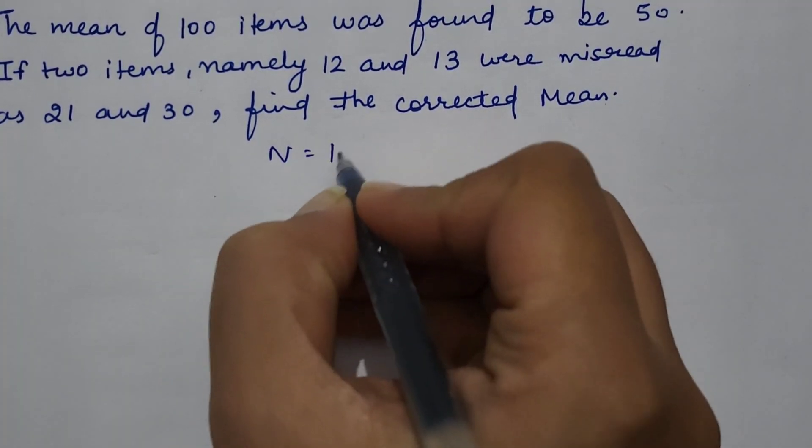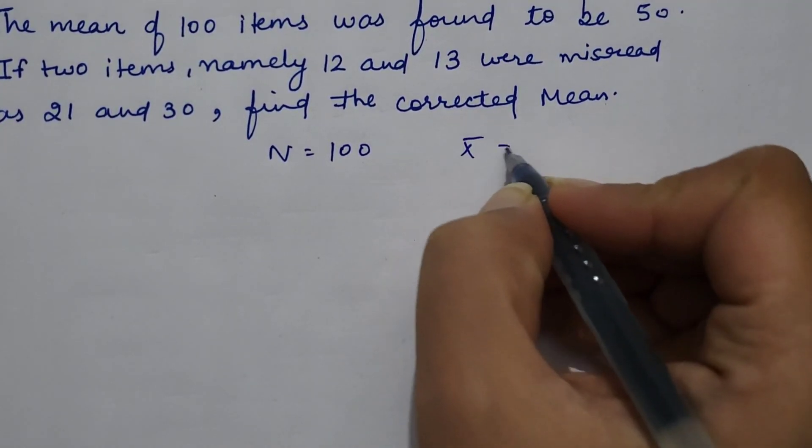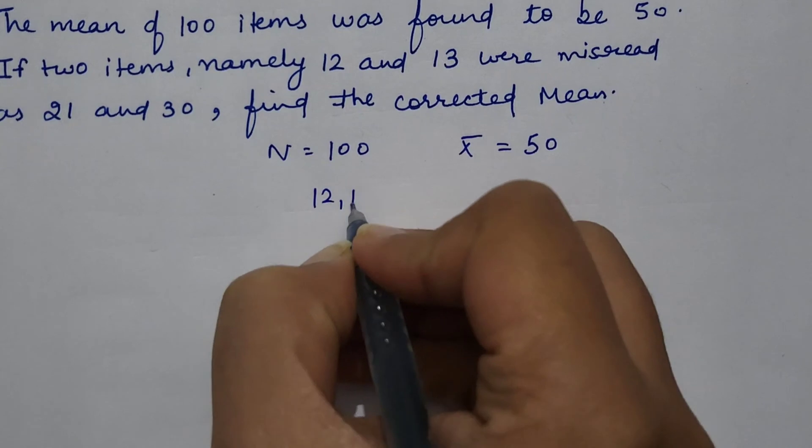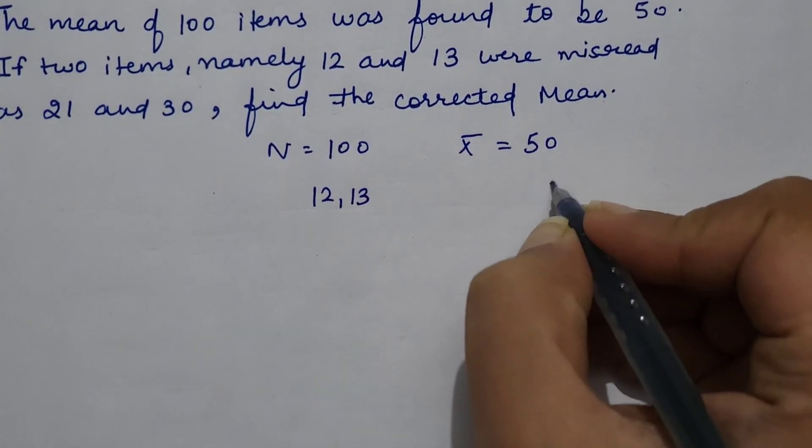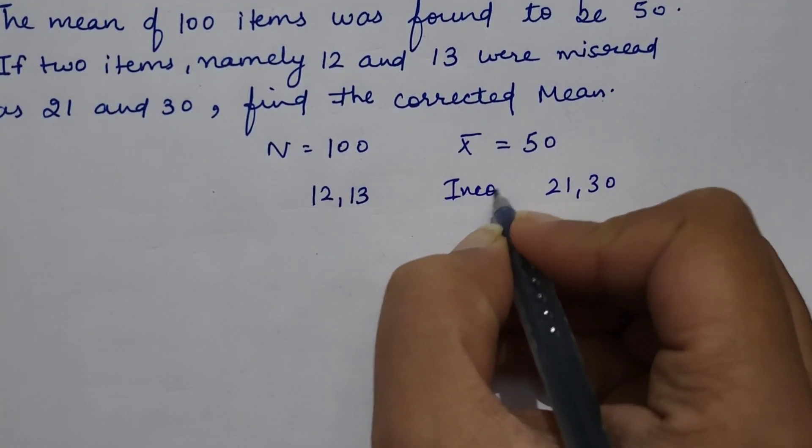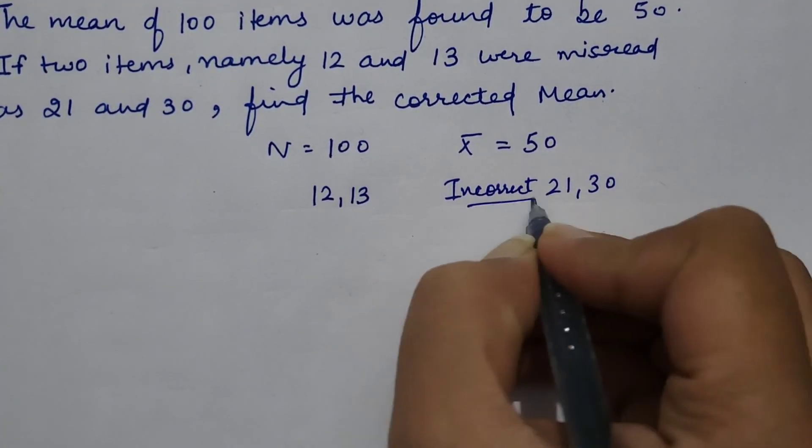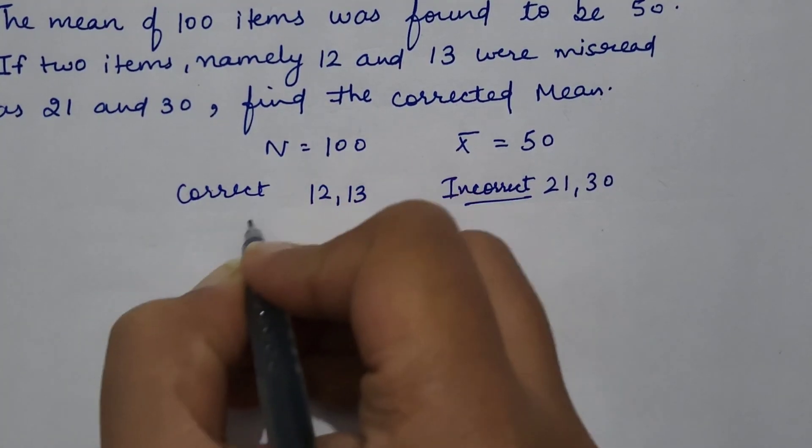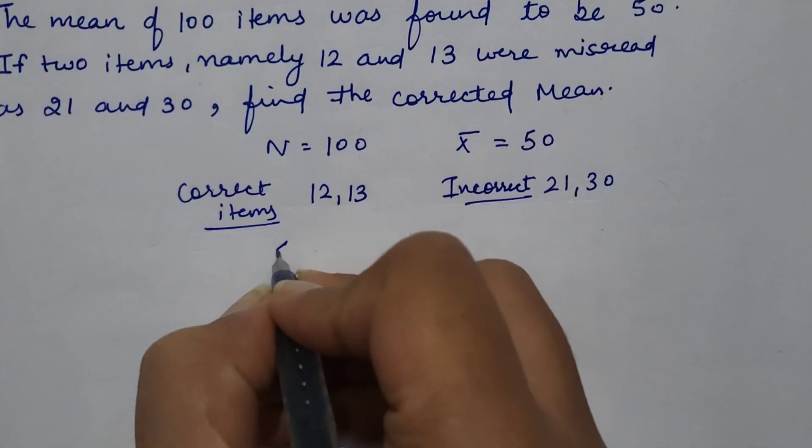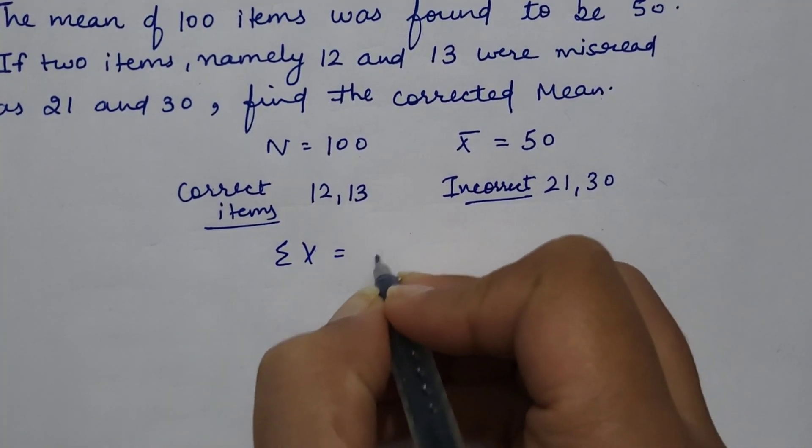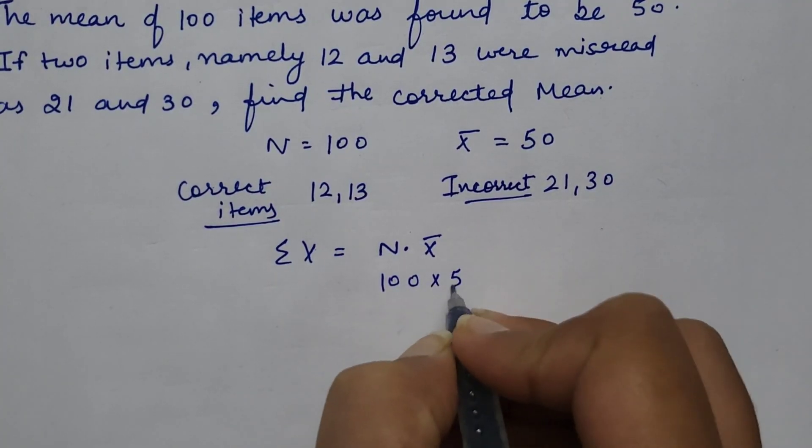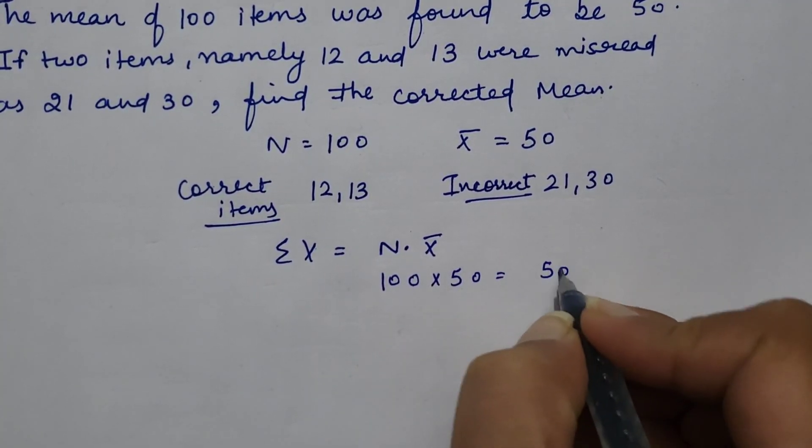Number of items is 100 and mean is 50. Two items 12 and 13 were misread as 21 and 30, so these are incorrect items. And 12 and 13 both are correct items. We need to calculate sigma x. We can calculate it by multiplying number of observations with the mean, that is 5000.